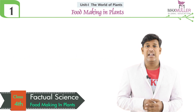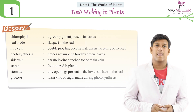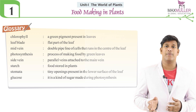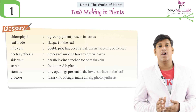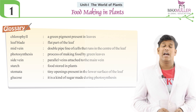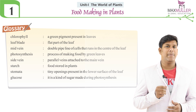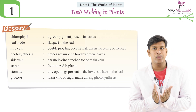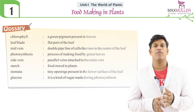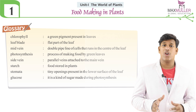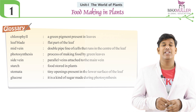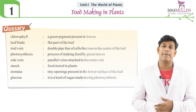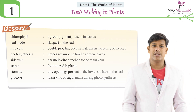This is all about today's topic — food making in plants. Let us discuss the glossary. Chlorophyll: the green pigment present inside the leaf. Leaf blade: the flat portion of the leaf. Midrib: the centered portion of the leaf which divides it into two parts. Photosynthesis: the process of preparing food by plants. Starch: the food stored in plants.